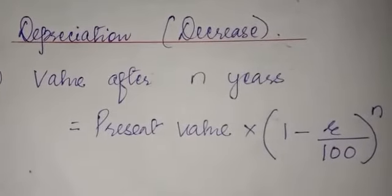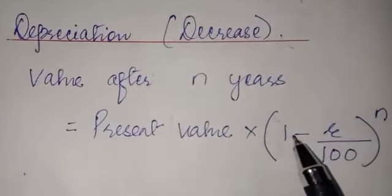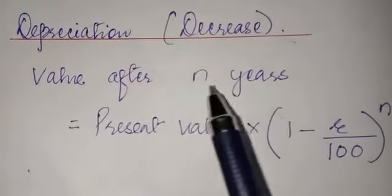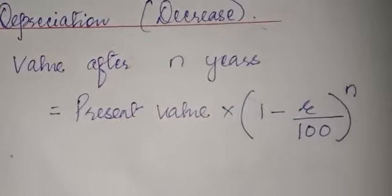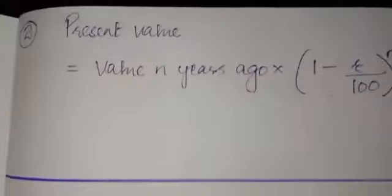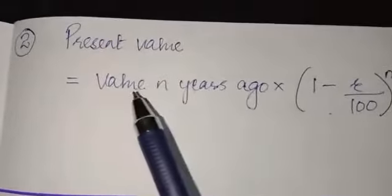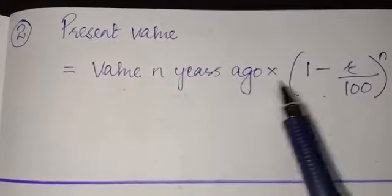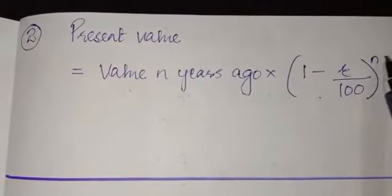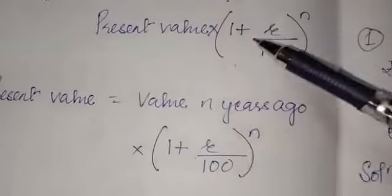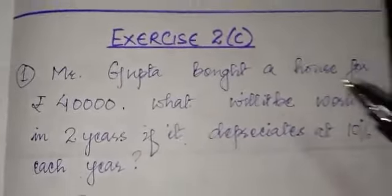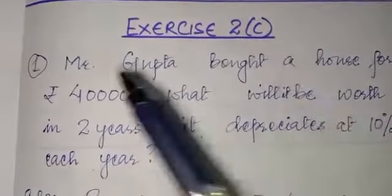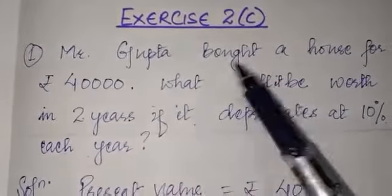When something is decreasing, there will be subtraction. Value after n years is equal to present value into 1 minus r by 100 to the power n. If you have to find the present value, then it is value n years ago into 1 minus r by 100 to the power n. So in appreciation there will be plus, and in depreciation there will be minus. Now we'll start Exercise 2C.